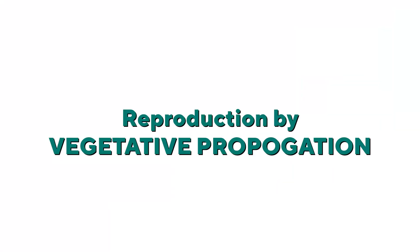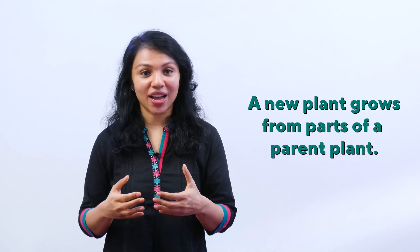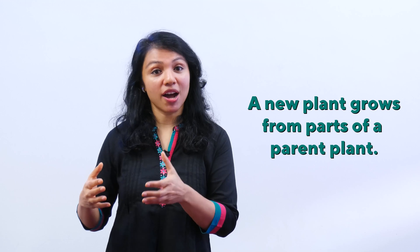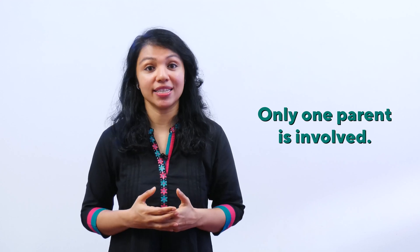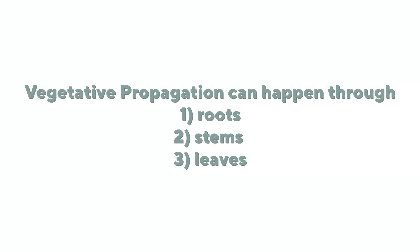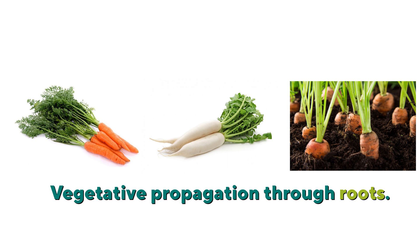Let's look at reproduction by vegetative propagation. When a new plant grows from the part of a parent plant, it's called vegetative propagation. Here, only one parent plant is involved. It can happen through roots, stems or leaves. Think of carrot and radish — new plants can grow from the roots of these plants.